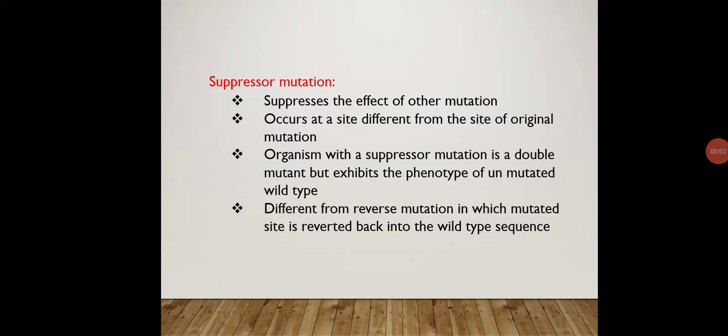Welcome dear students. We have started with the mutation chapter and in our last lecture we have discussed about the different types of point mutation like nonsense, missense, null mutation, conditional mutation, amber mutation etc. In this lecture we will discuss other types of mutation, among them one is suppressor mutation.